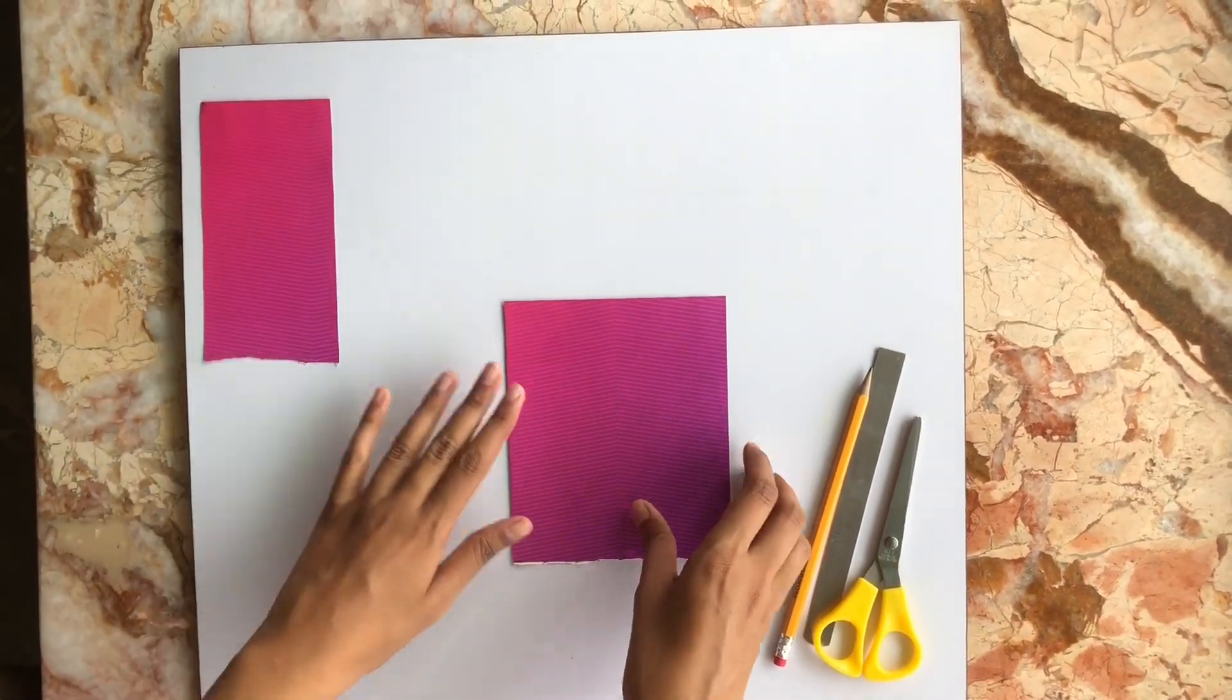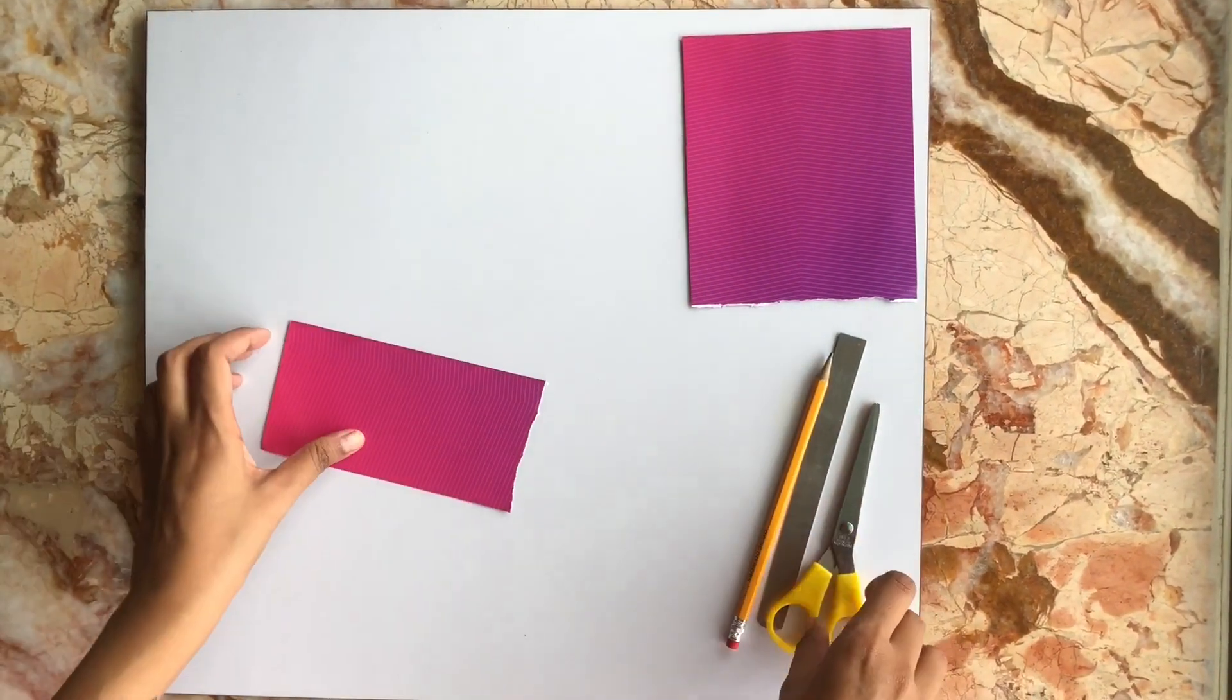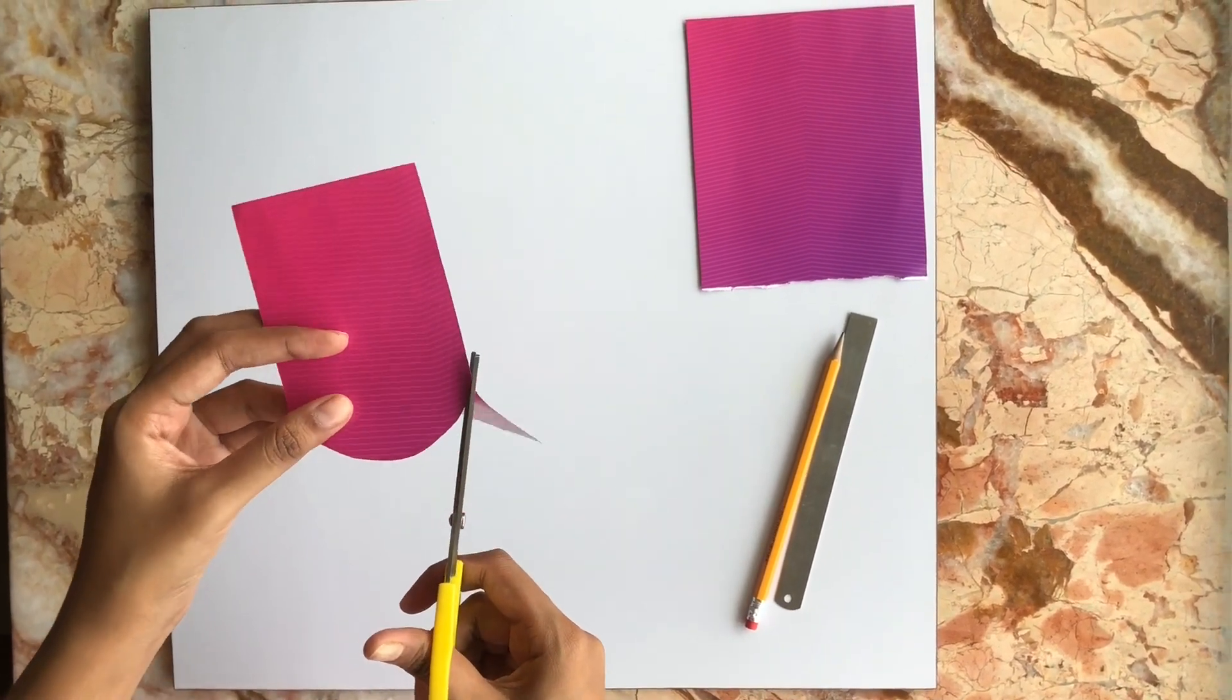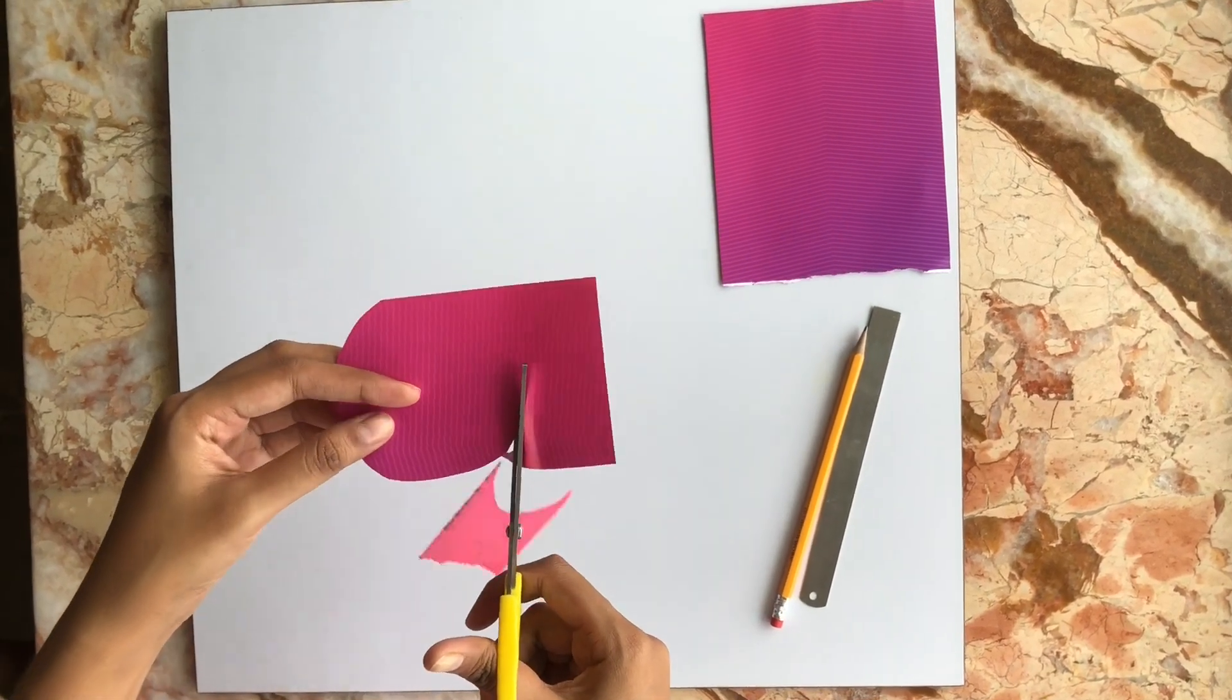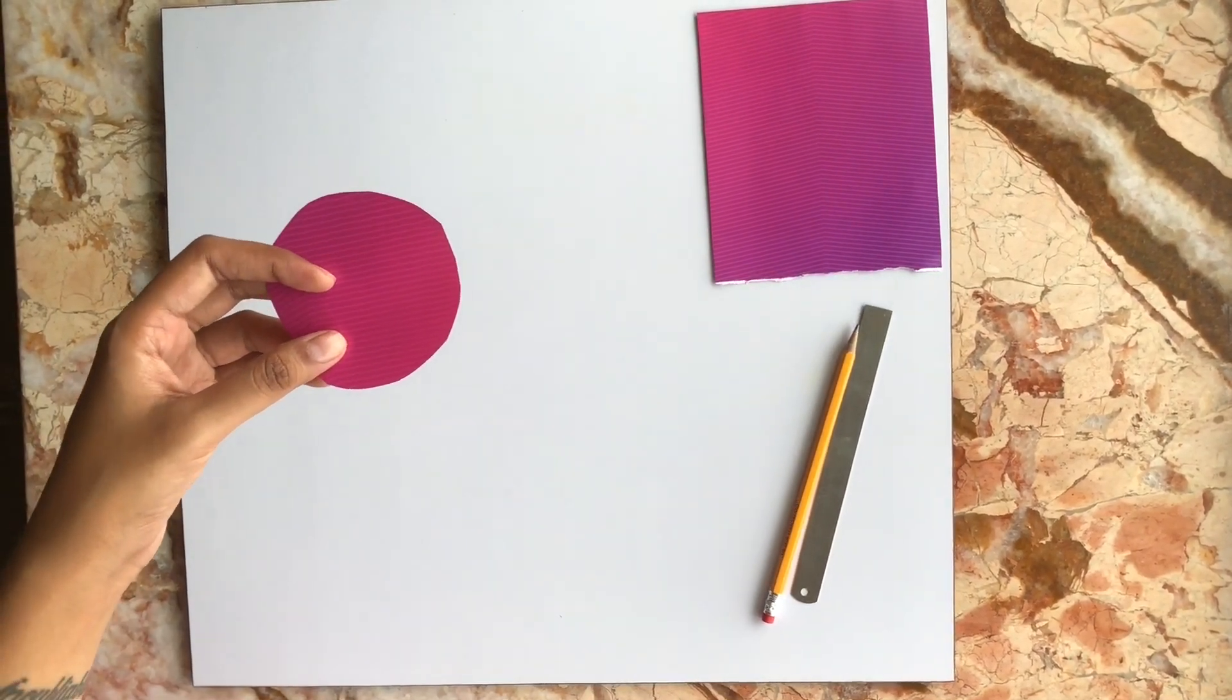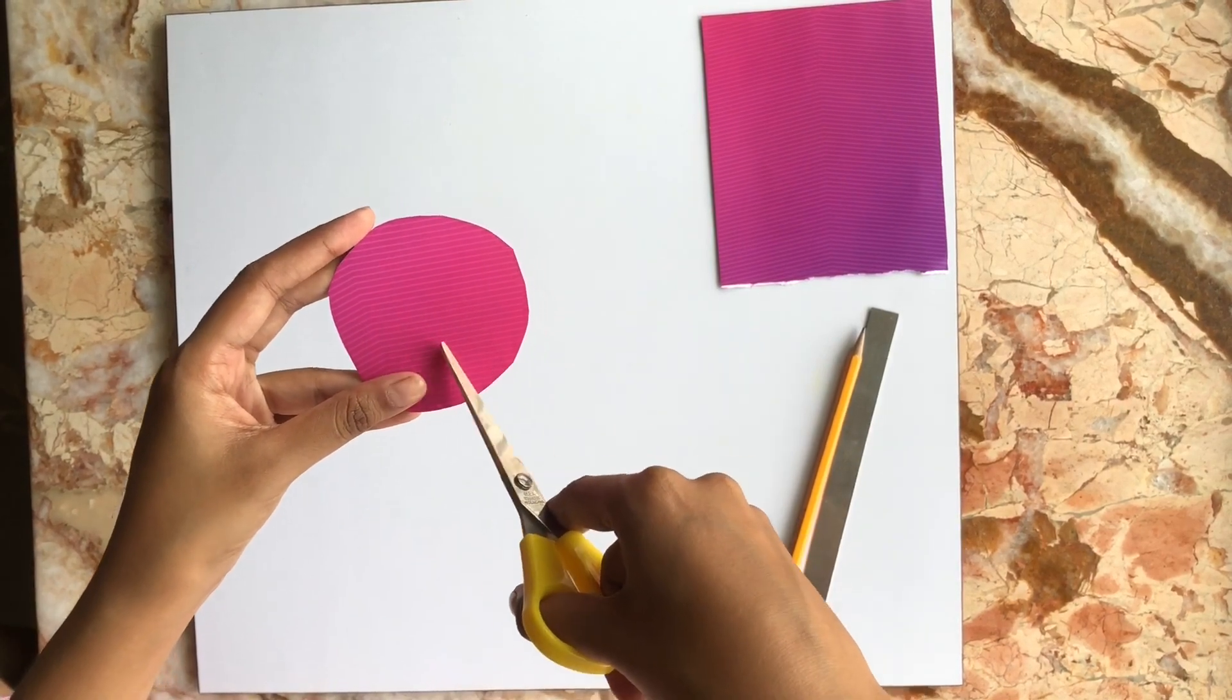The larger part of the paper will be used to create the petals, which we'll step into later. Taking your scissors, roughly cut this paper into a circle. Now we'll cut further circles into this paper.